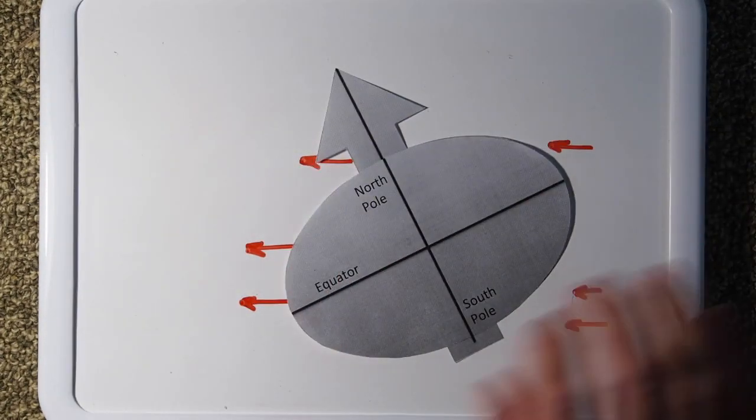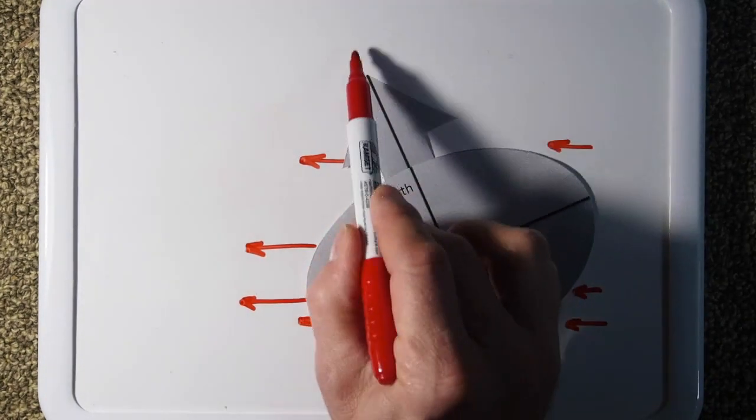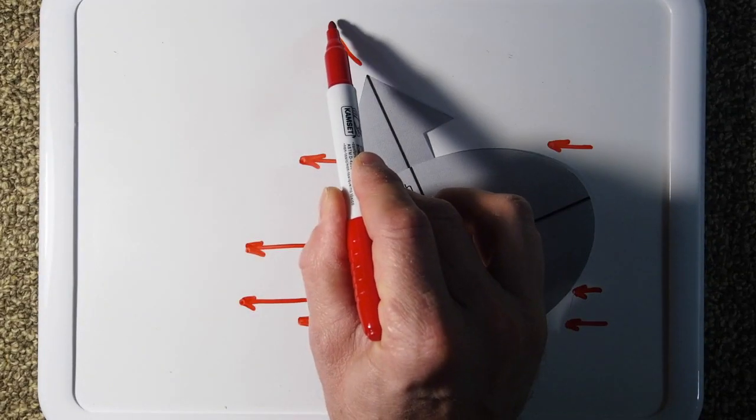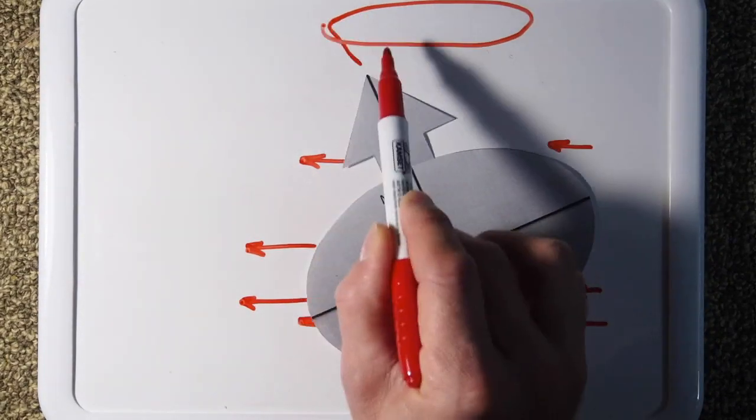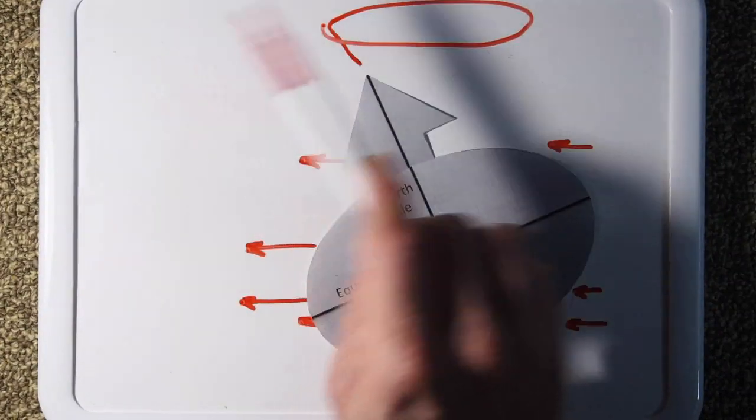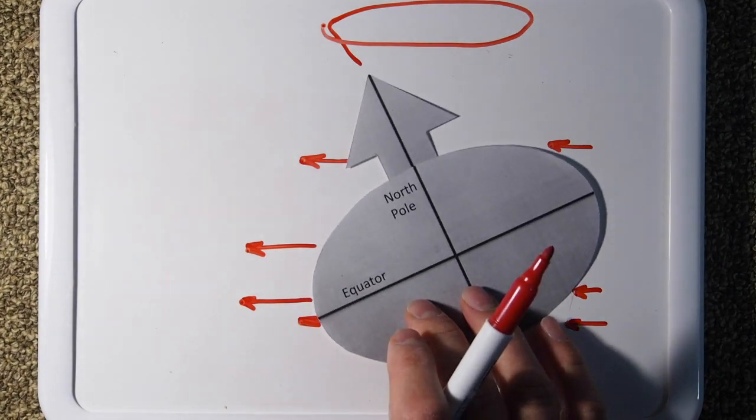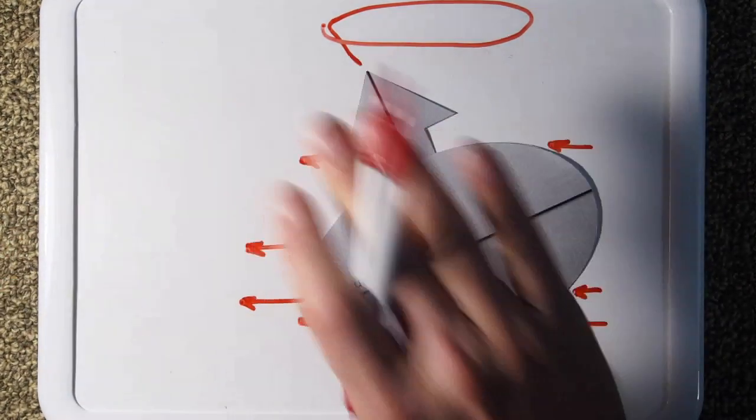So that's what causes this precession, where if you were to project the North Pole against the sky, you would see a big motion. Every 26,000 years, it does this kind of loop. Now, it's still tilted in regard to the Sun. It's just precessing like a top.